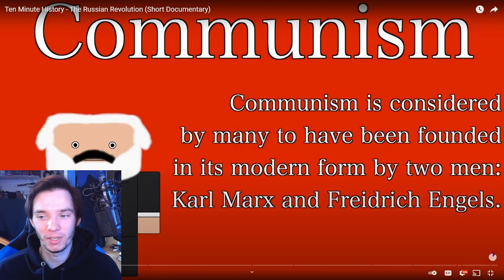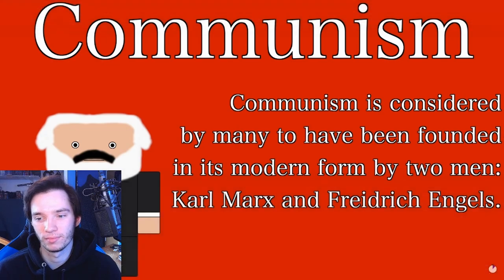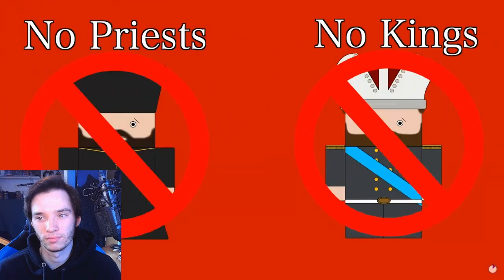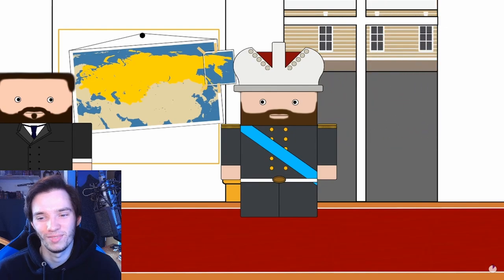Communism is considered by many to have been founded in its modern form by two men, Karl Marx and Friedrich Engels. To simplify, communism is a political ideology which argues that the means of production, such as factories, should be collectively owned by everyone as opposed to individuals. It wanted to abolish social classes and believed that the economy should be entirely controlled by the central government. The imperial Russian government suffered from being somewhat distant and incompetent — for example, agriculture was slow to industrialize and there were numerous foreign policy failings.